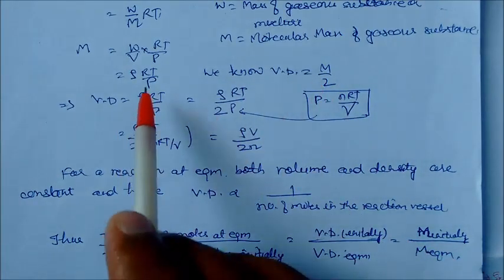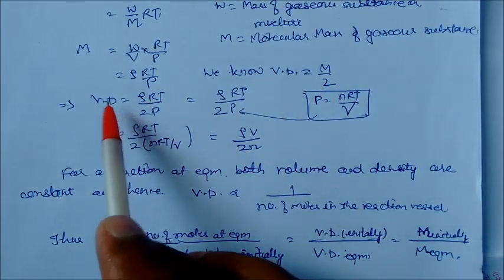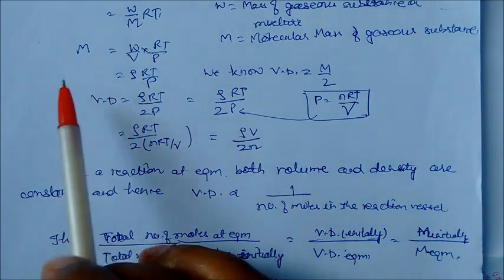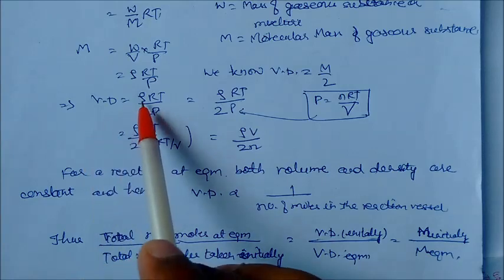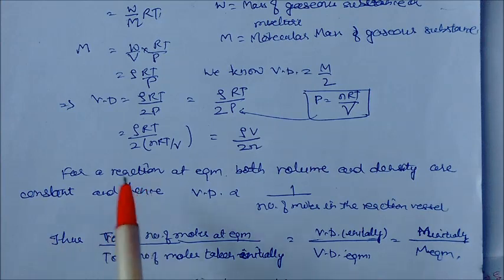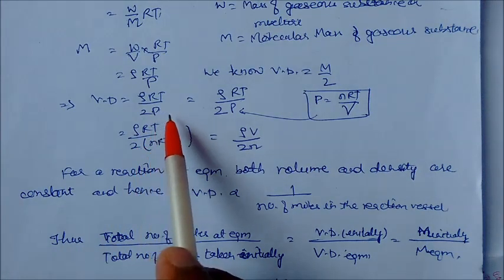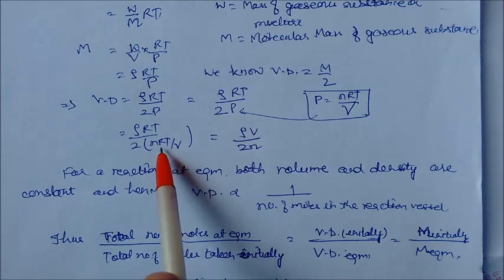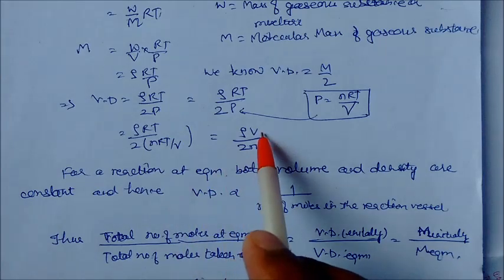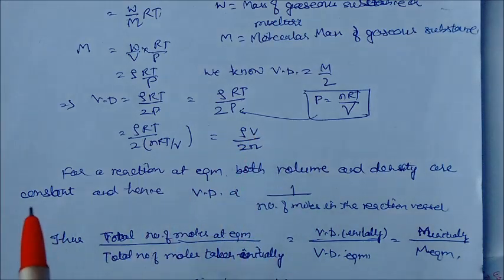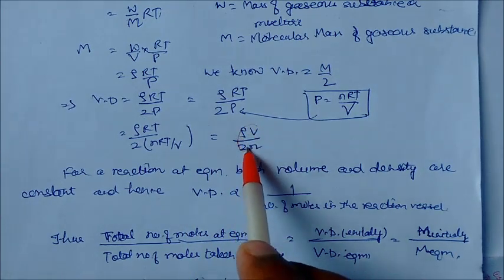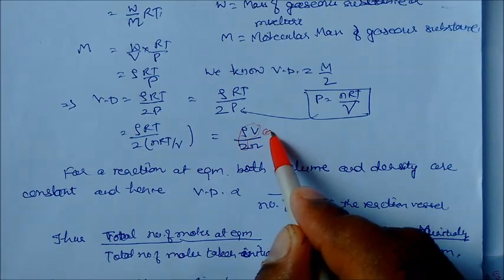We know vapor density V = M/2, so M = 2V. Substituting into the gas equation, and using P = nRT/V, we get: vapor density is proportional to (density × volume) / (2 × n). Since density and volume are constant at equilibrium, vapor density is inversely proportional to the number of moles n.